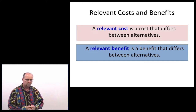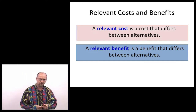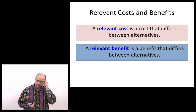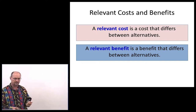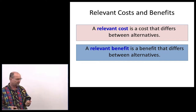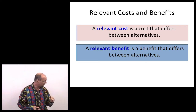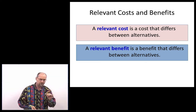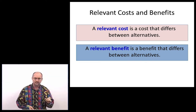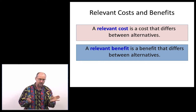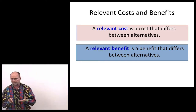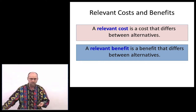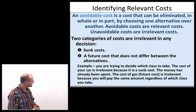An irrelevant cost is a cost that differs between choice A and choice B. If you're going to incur the same cost regardless, it's irrelevant. The focus is: will the costs and revenues be different if we choose one path or the other? If they're going to remain the same, then they're not part of our consideration process.